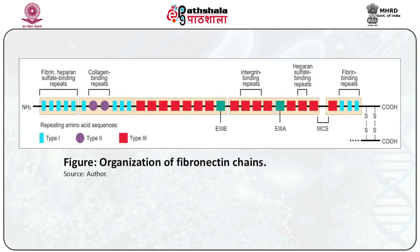Each fibronectin chain consists of about 2500 amino acids arranged into three types of repeat sequences — types 1, 2 and 3 — giving the molecule a beaded appearance under the electron microscope. Alternative mRNA splicing can exclude repeats such as EDB and EDA as in circulating fibronectin. The conserved RGD sequence enables type 3 repeats to bind integrins. Other regions include specific binding sites for heparan sulfate, fibrin and collagen.